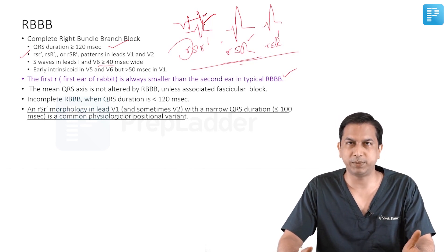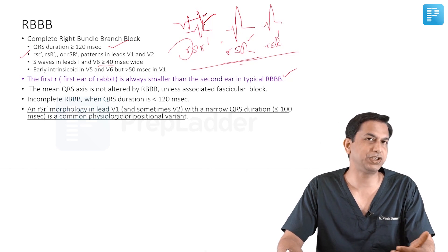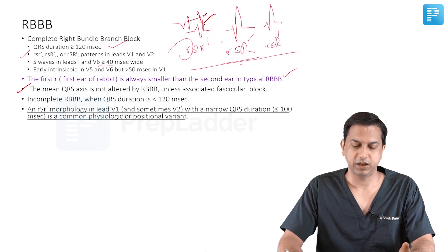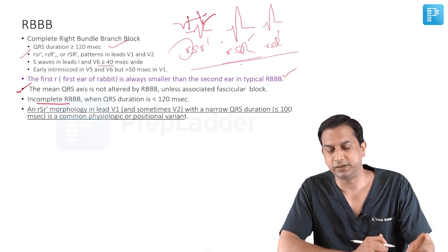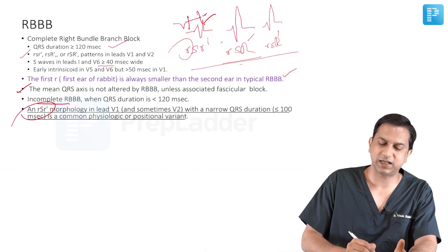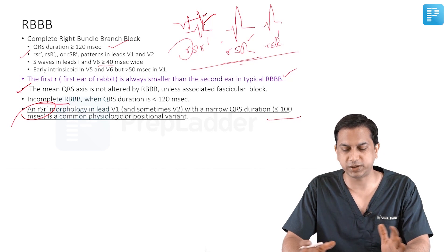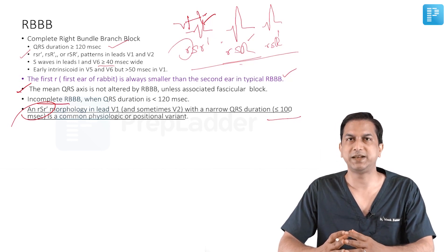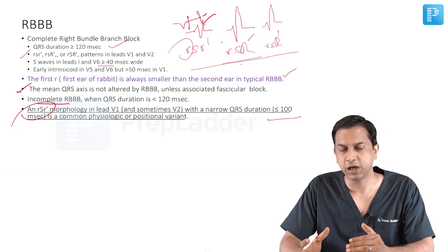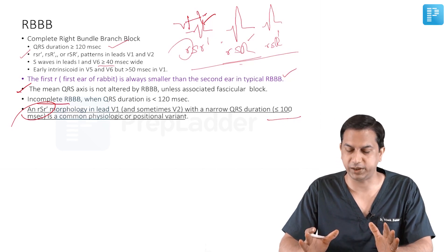Normally in right bundle branch block, you do not have axis deviation if there is no other pathology. If there is an additional left anterior fascicular block, you can have left axis deviation. If there is an additional left posterior fascicular block, you can have right axis deviation. We call it an incomplete right bundle branch block when the QRS duration is less than 120 milliseconds — specifically 100 to 120 milliseconds with an RSR' pattern. If the QRS duration is less than 100 milliseconds with an RSR' pattern, we call it a physiological positional variant — it is not a right bundle branch block. For a complete right bundle branch block, the QRS duration must be more than 120 milliseconds.